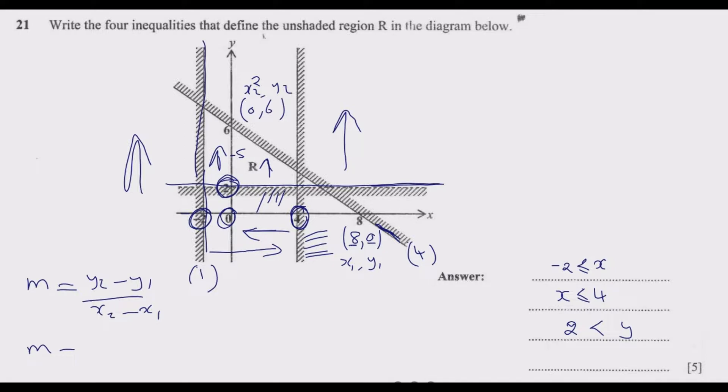The gradient will be 6 minus 0 over 0 minus 8, which is 6 over negative 8. When we simplify this, we're going to end up with negative 3 over 4 as our gradient.